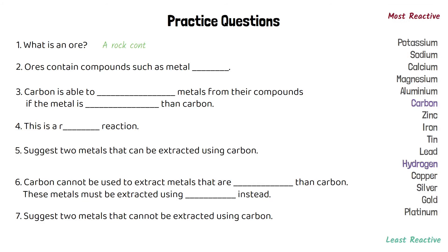An ore is just a rock that contains large amounts of metal compounds. Ores contain compounds such as metal oxides, for example copper oxide. Carbon is able to displace metals from their compounds if the metal is less reactive than carbon. This process is known as a reduction reaction.